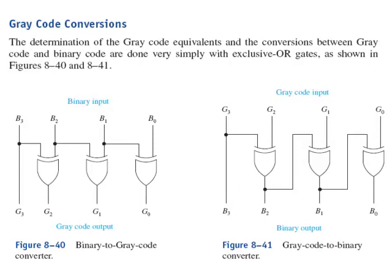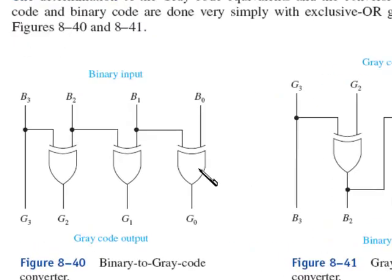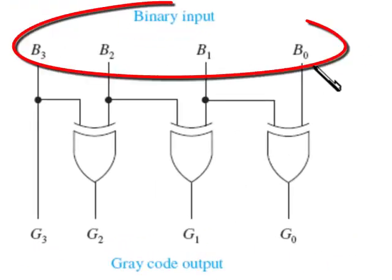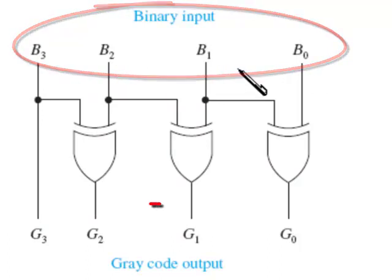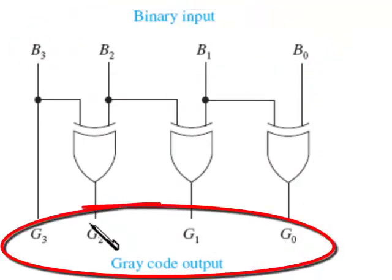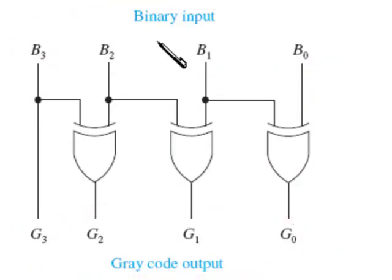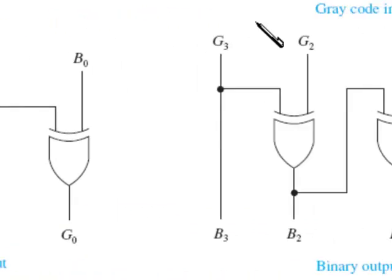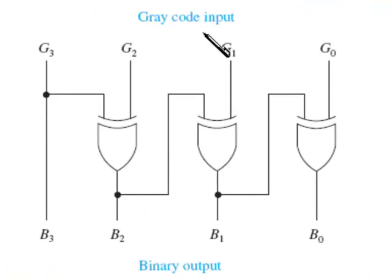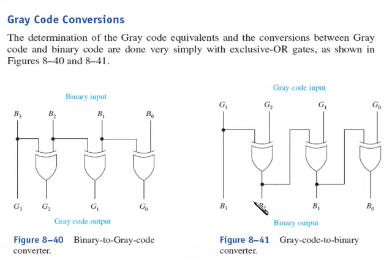So to convert from binary to gray code, a series of exclusive OR gates. You put the binary code on here, and you'll automatically get the gray code out for the corresponding binary that we saw in that table. And going the other way, you put the gray code in on this side, you'll automatically get the binary out. Now notice the circuit connections are slightly different from figure 40 to figure 41.